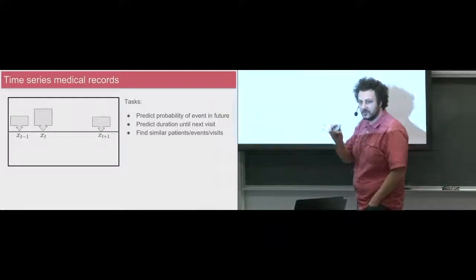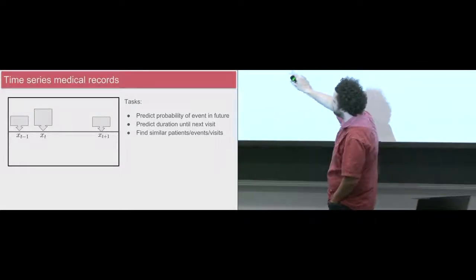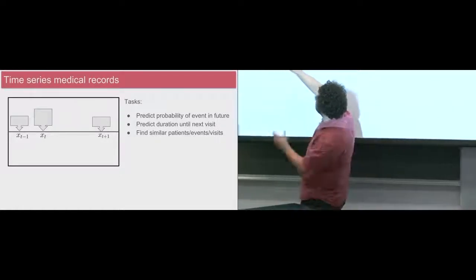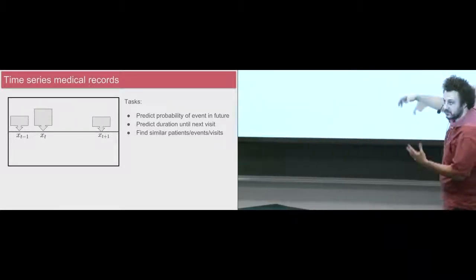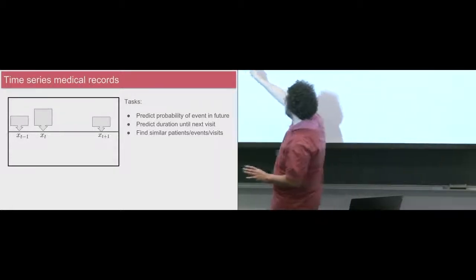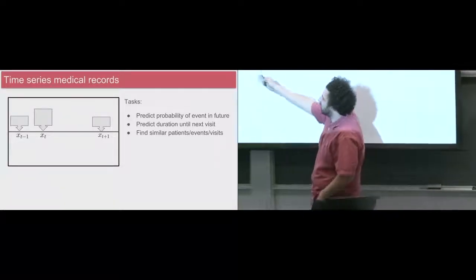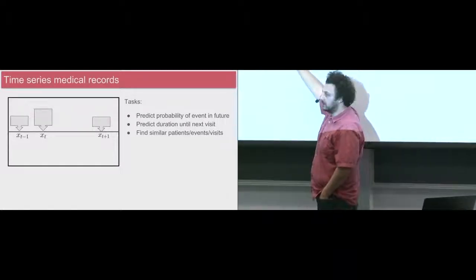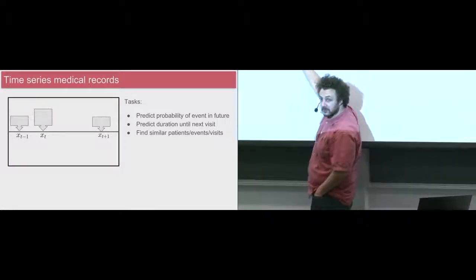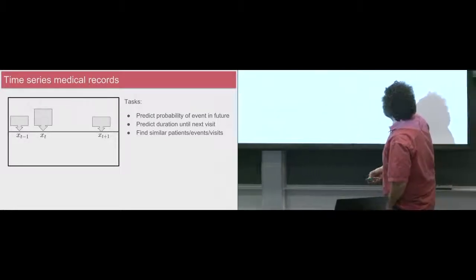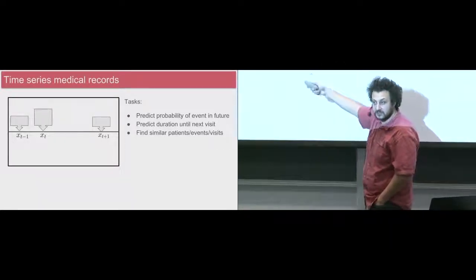Now let's talk about time series medical records. We want to look at what the space looks like — we have some events. If each of these is a visit, we have time x_{t-1}, x_t which is the visit today, and x_{t+1} which is the next visit. We want to predict the probability of some event in the future — will this event be dangerous, what kind of intervention will be required, will it be routine, what will their blood pressure be?